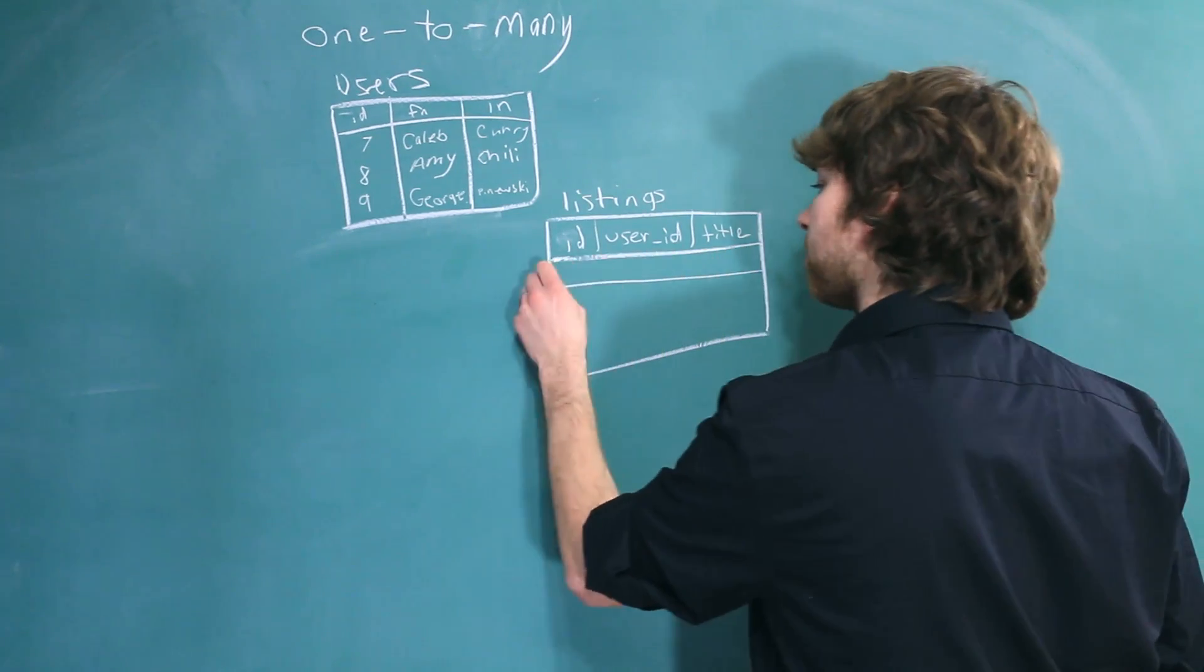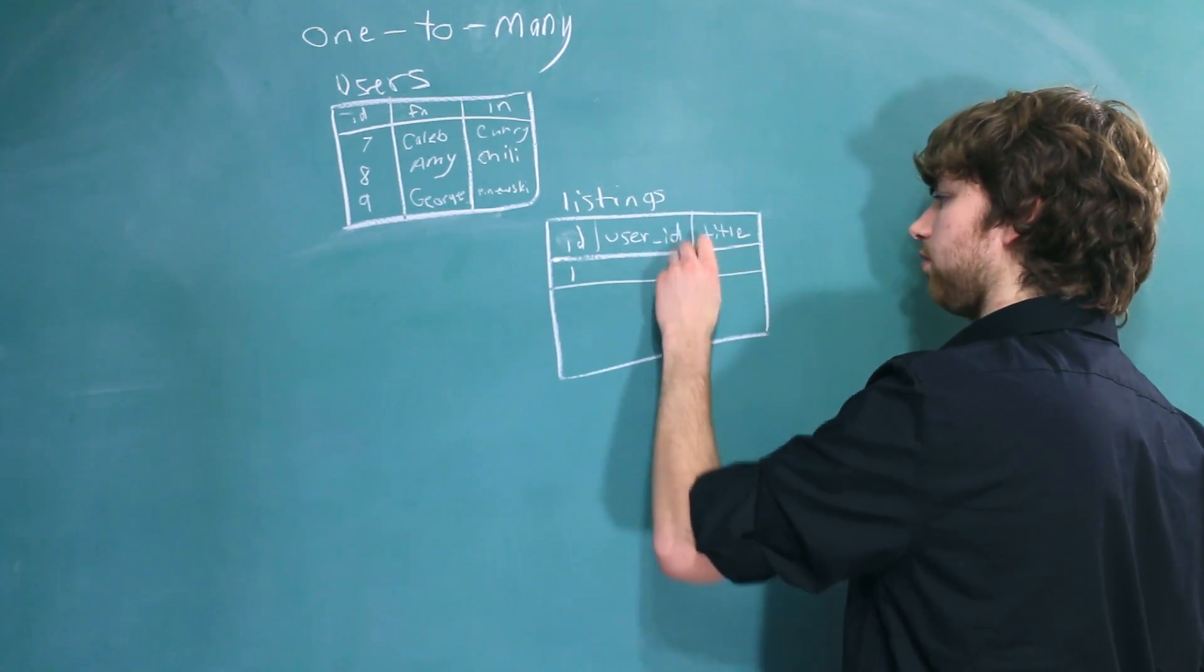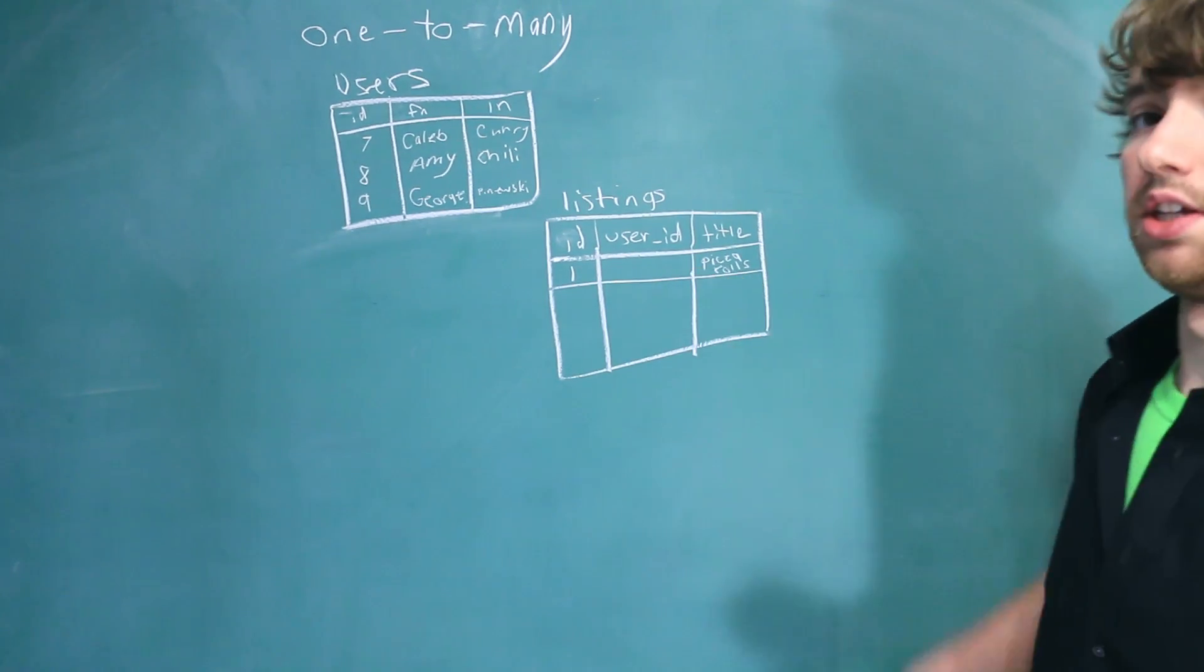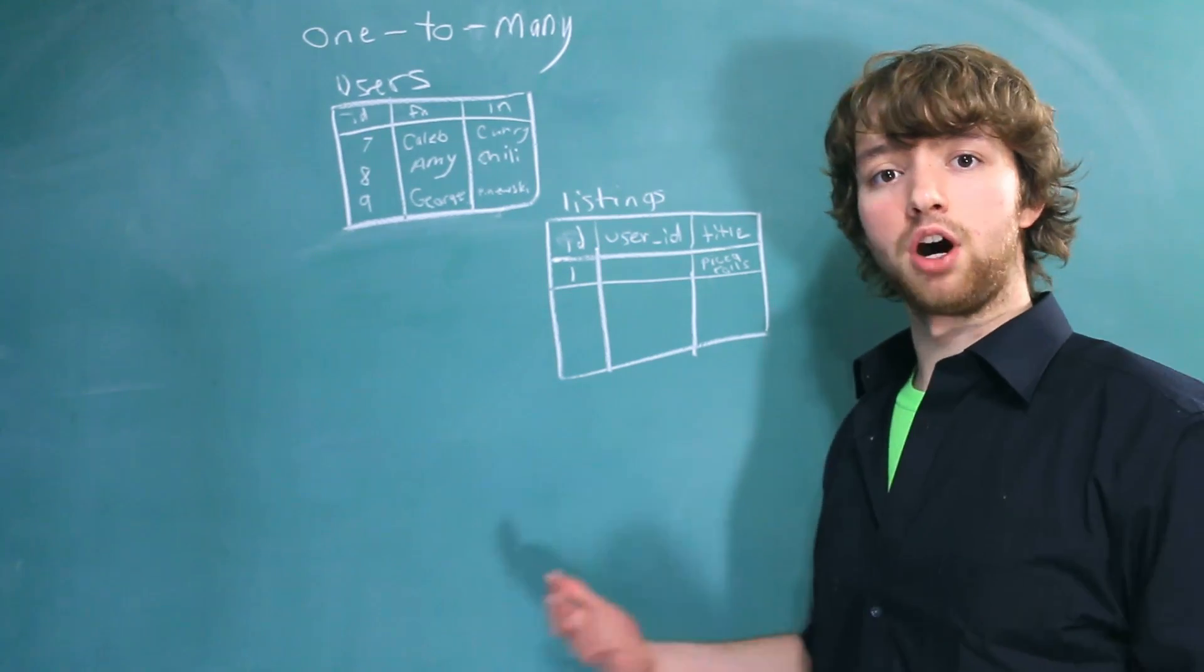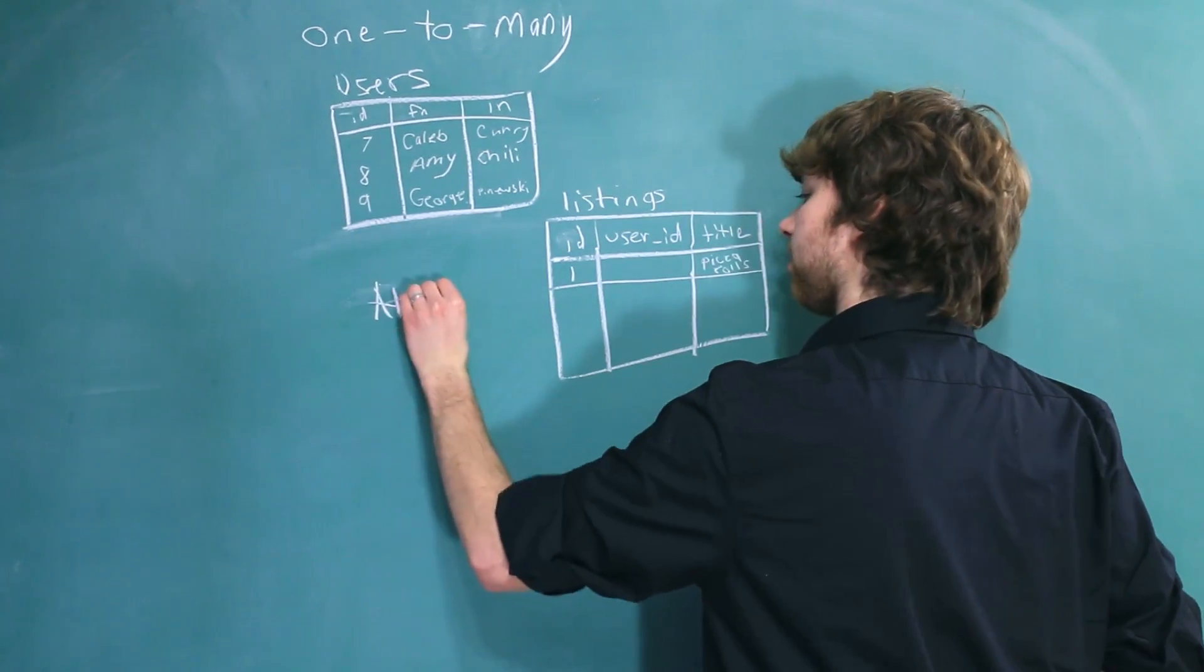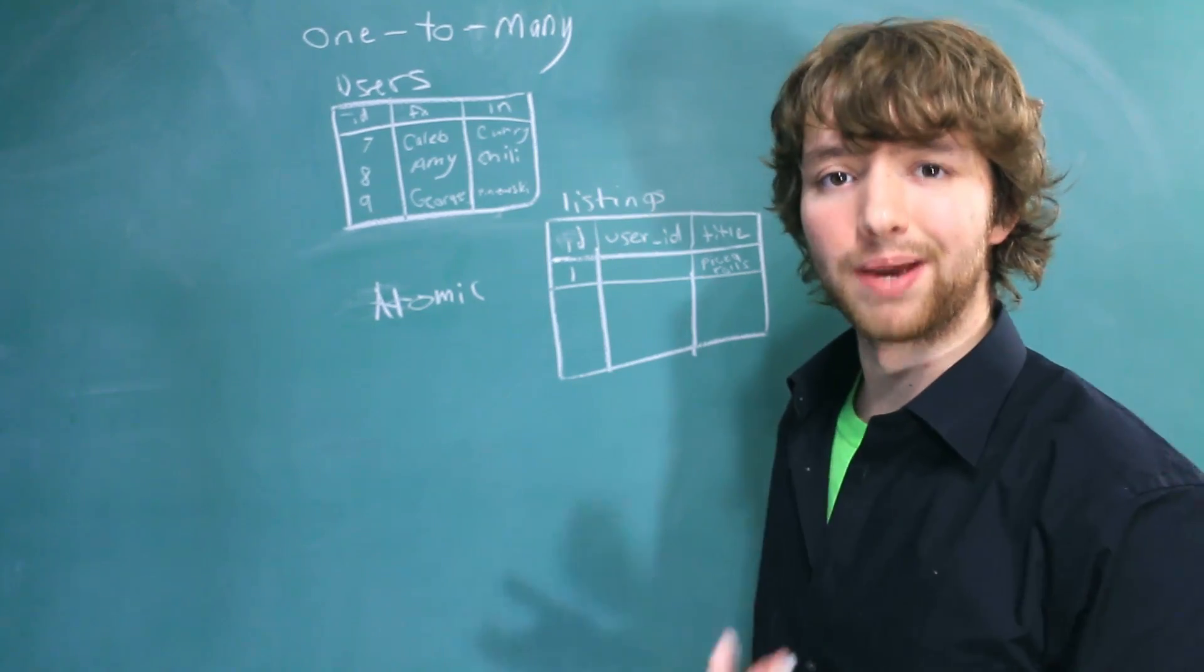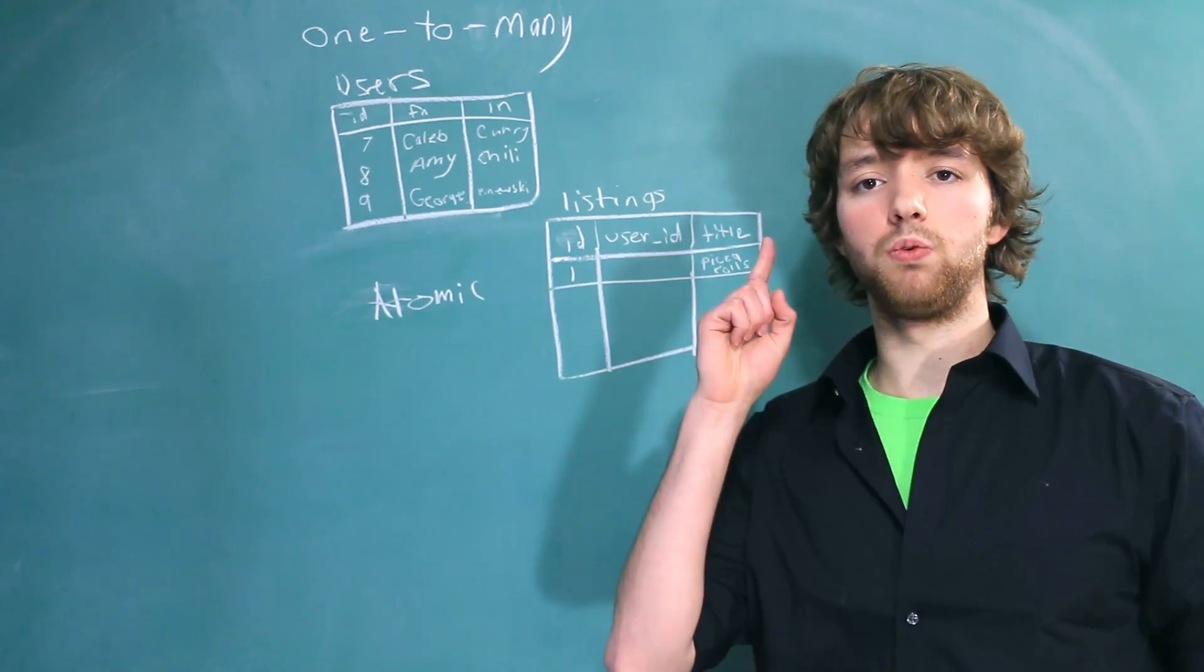So let's put some data in here. We'll give the first one an ID of one, and then we'll give it a title of pizza rolls. And now we just need to give it a user ID. Now the thing with database design is that we try to keep everything atomic. If you haven't heard of that word, it essentially means the smallest indivisible piece that still makes sense.